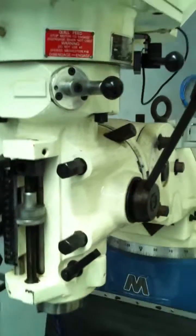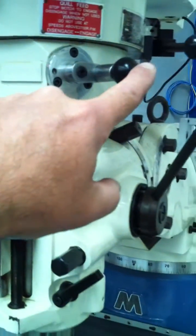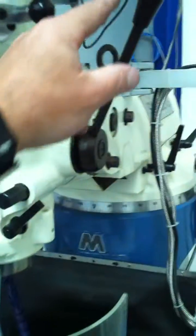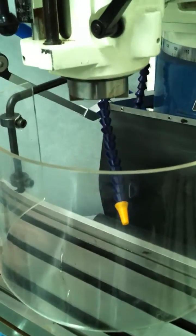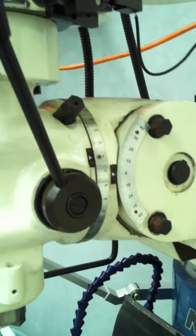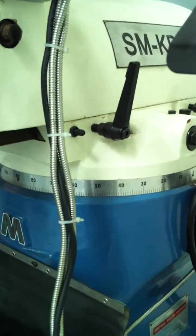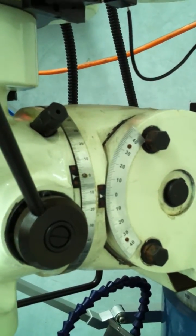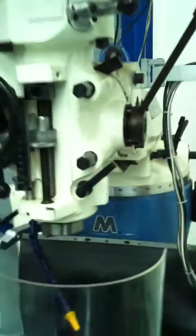We've also got quill feed as you can see via this control here. You can also bring that down manually via this handle. The KD2 tilts, rotates in that plane, and also tilts and swivels in those two axes, making it a very flexible machine.